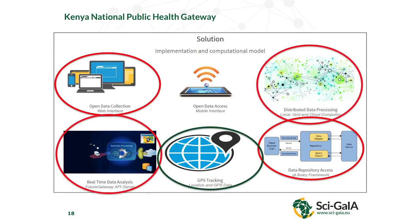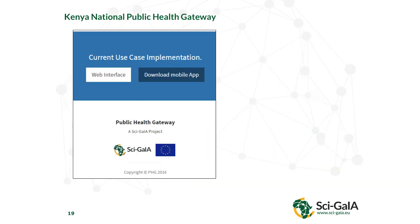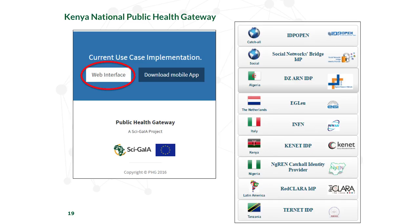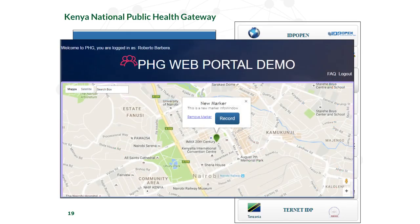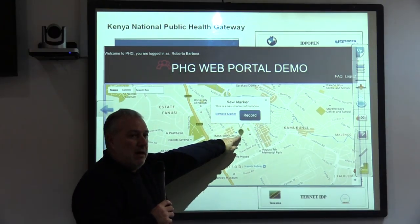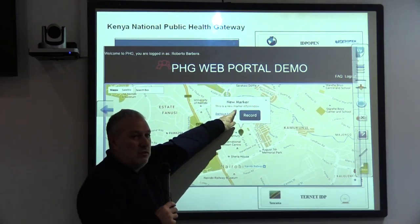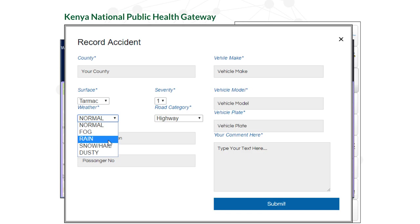There is real-time analysis on distributed computing, and through the web app, people are notified in push mode about dangerous streets based on GPS tracking. The mobile app is not yet on Google Play but will be released in the next couple of weeks. You can already see the web interface — you sign in with federated credentials and see a map of Nairobi. You can right-click on the map to insert a new accident, recording data such as vehicle model, weather, and road conditions.